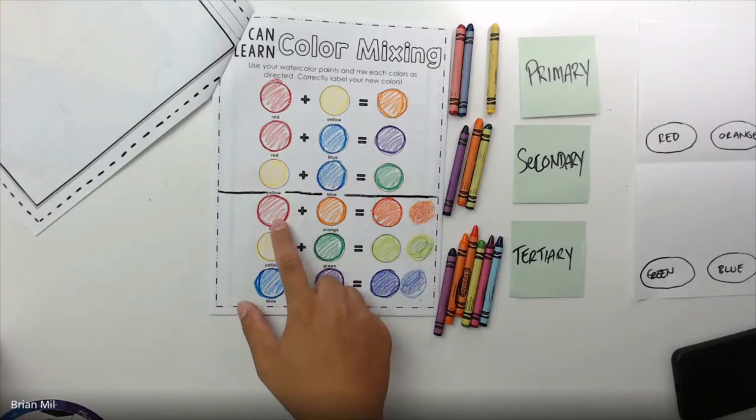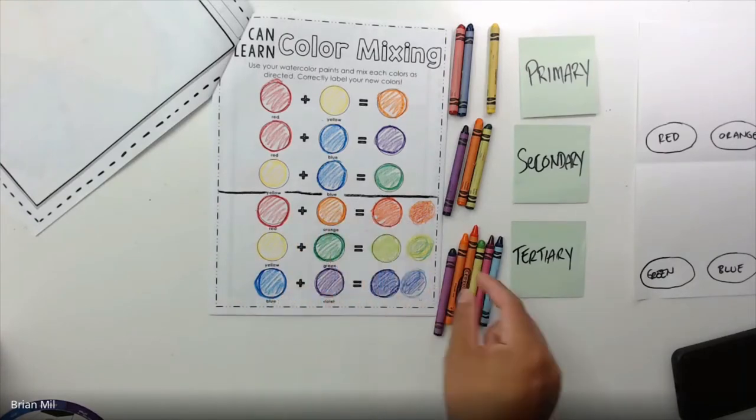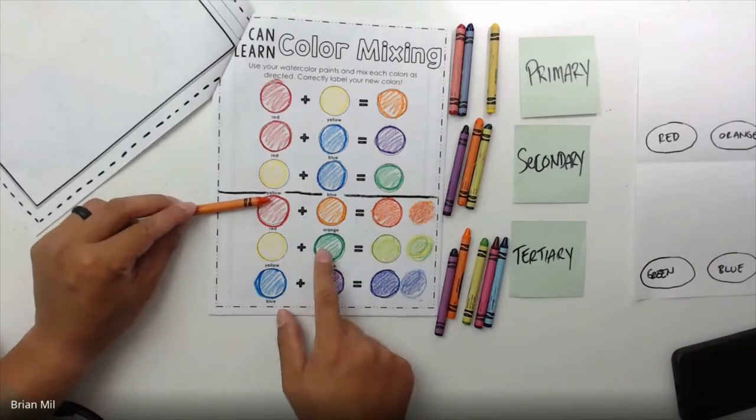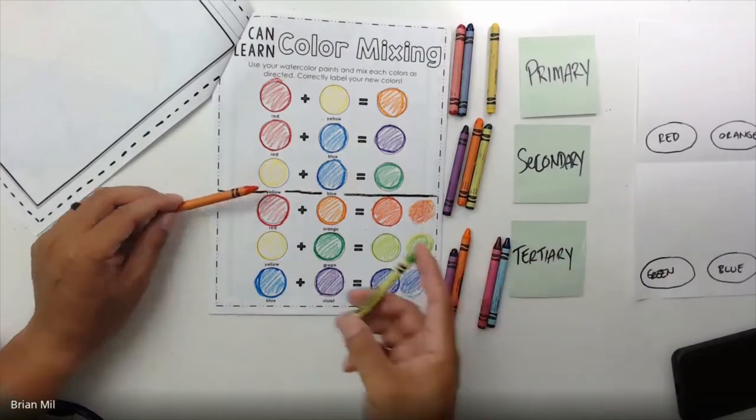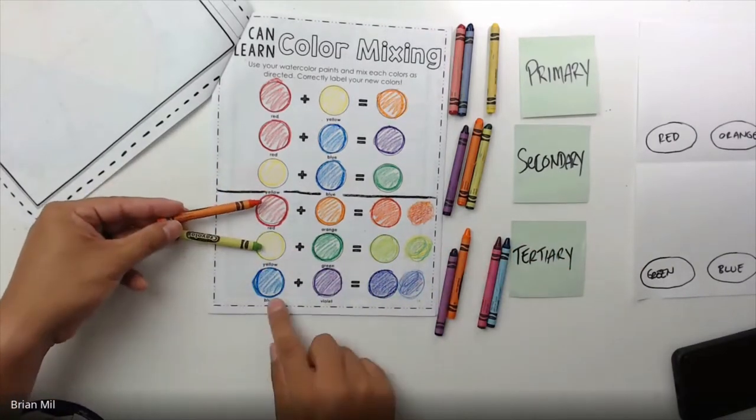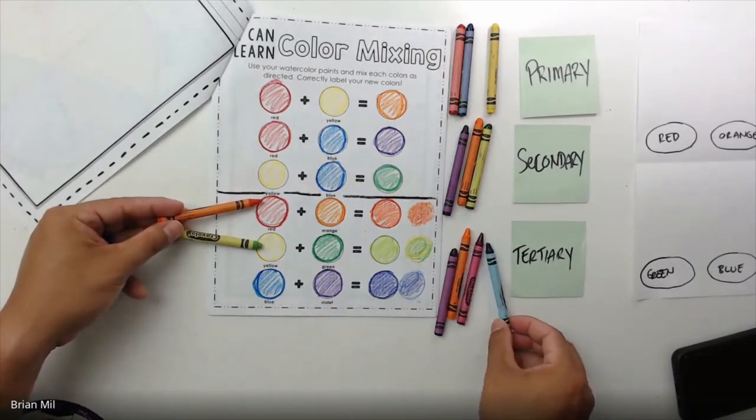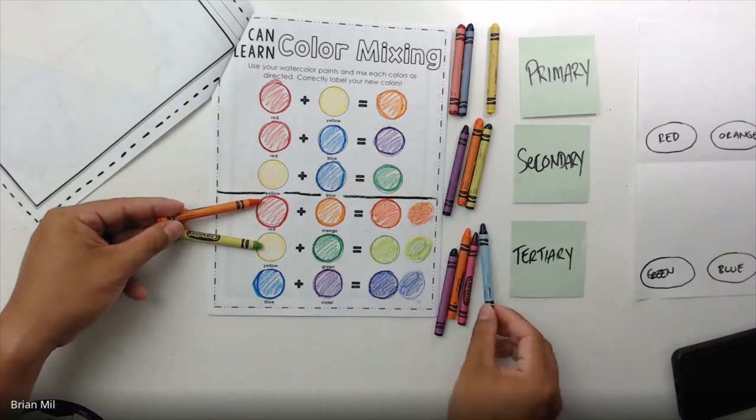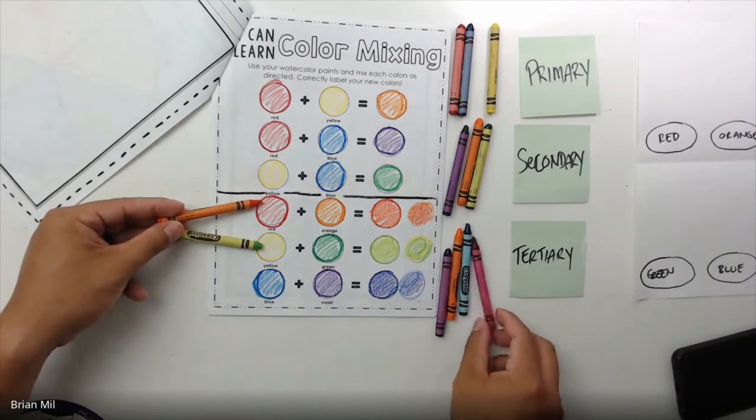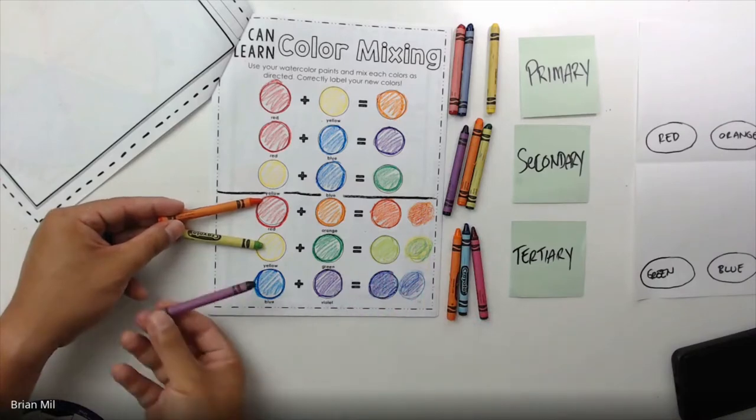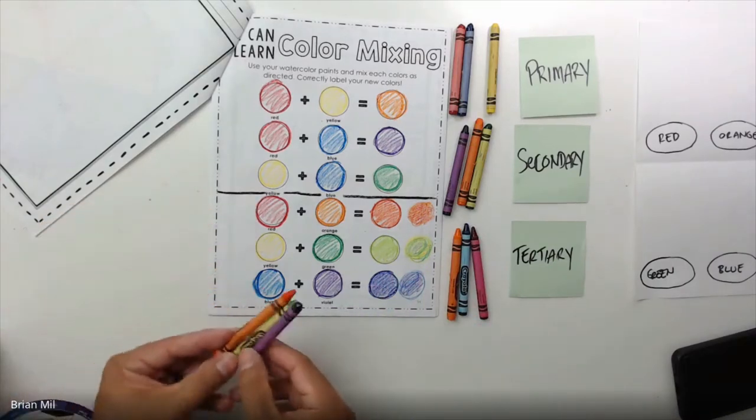Tertiary colors are basically anything that's between the secondary and primary colors. And we'll talk about that right now. So red plus orange equals red orange. So it was this color right here. Yellow plus green equals yellow green, which is this color right here. And blue plus violet equals blue violet, which is this one right here.